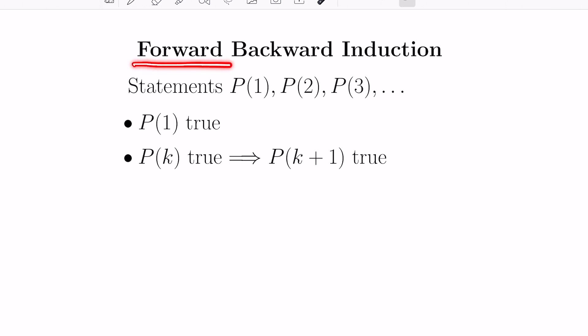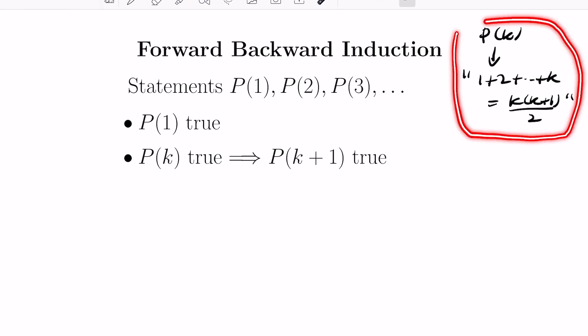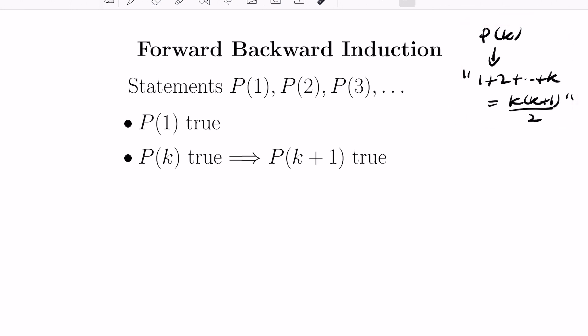Before starting with forward-backward induction, we're going to think about what induction really is about in general. You have a bunch of statements indexed by the positive integers. For example, the kth statement could be something like the sum of the positive integers from 1 to k is exactly k times k plus 1 all over 2. We're not going to prove that specific one, but I want to set up how induction works and then look at how we twist it to get forward-backward induction.